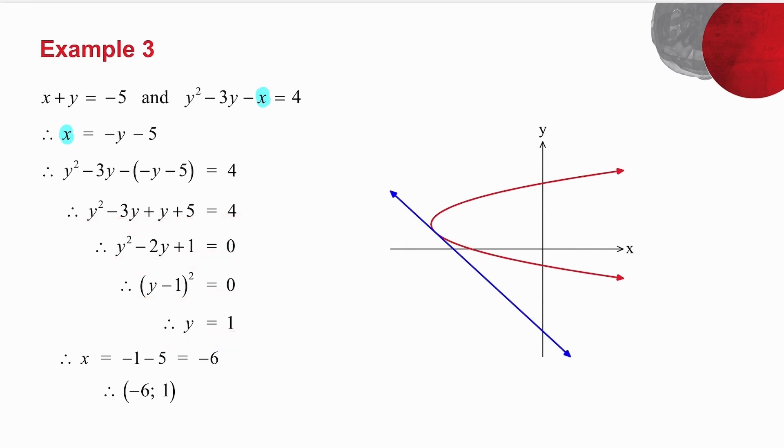Now be very careful. A very common mistake is people start putting x's in here. This is a quadratic in y, which means when I factorize it, it must be y, and I'm solving for y. You'll notice I only get one solution, and we'll look at that just now.